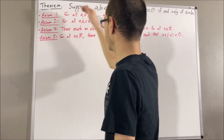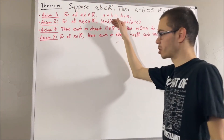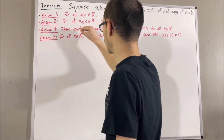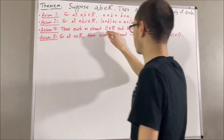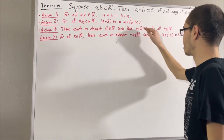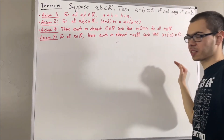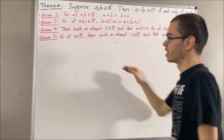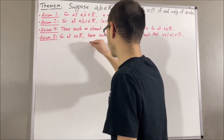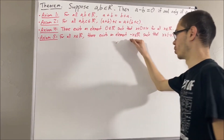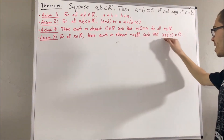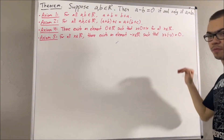Axioms 1 and 2 are just the commutative and associative laws. Axiom 4 tells us that there exists a real number, which we call zero, that has the property that x plus zero is equal to x for all real numbers x. And axiom 5 tells us, for all real numbers x, there exists a real number, which we call negative x, that has the property that x plus the negative x is equal to zero.